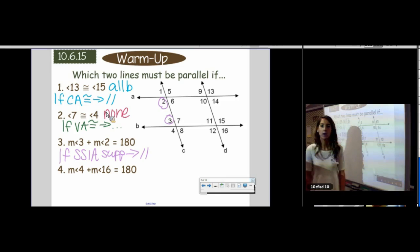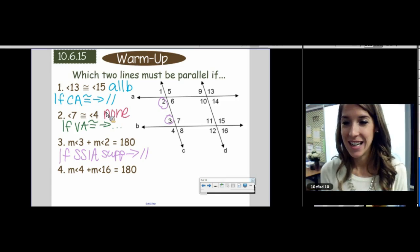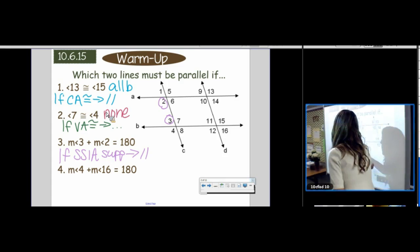So now we just have to pick the lines, and it's the same as number one. Right? Yep. A is parallel to B.